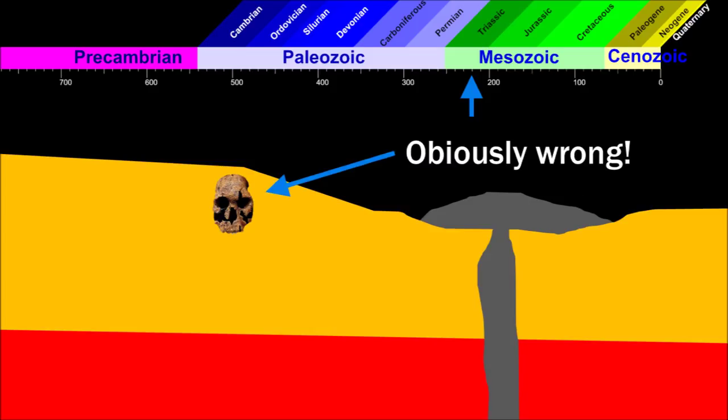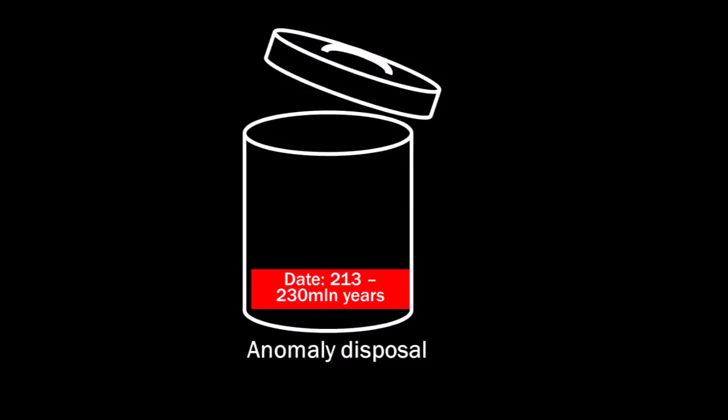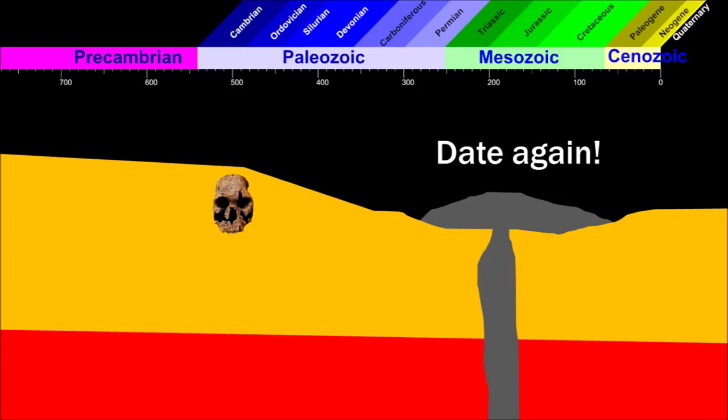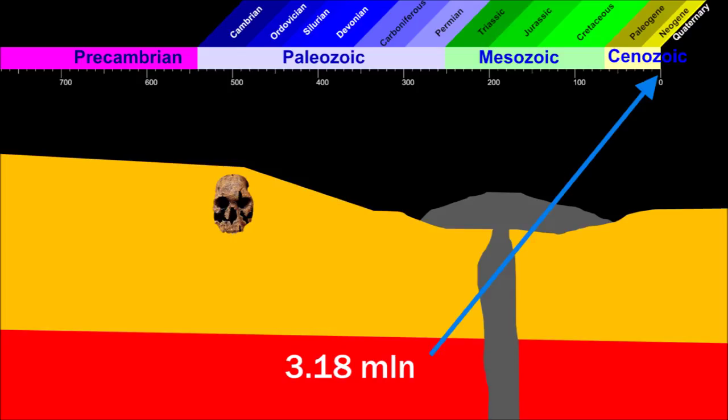Human-like creatures did not exist yet. Get rid of that date. So the scientists started to date other layers. The layer below the rock that contains the fossil was dated 3.18 million years. So that shows that the other dating was wrong.